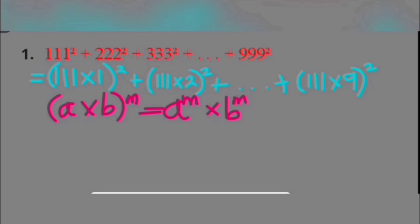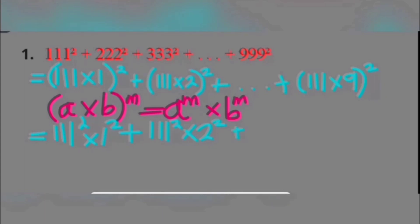So we're going to apply this to the expression we have above. That means our expression becomes 111 squared times 1 squared, plus 111 squared times 2 squared, plus 111 squared times 3 squared, and it continues like that until we get to the last term, which is 111 squared times 9 squared.